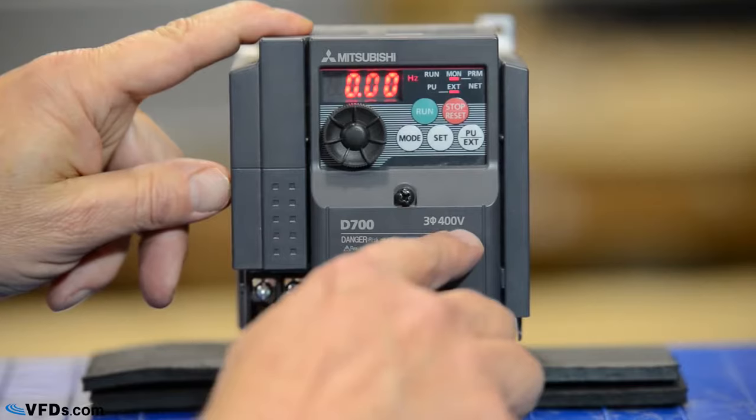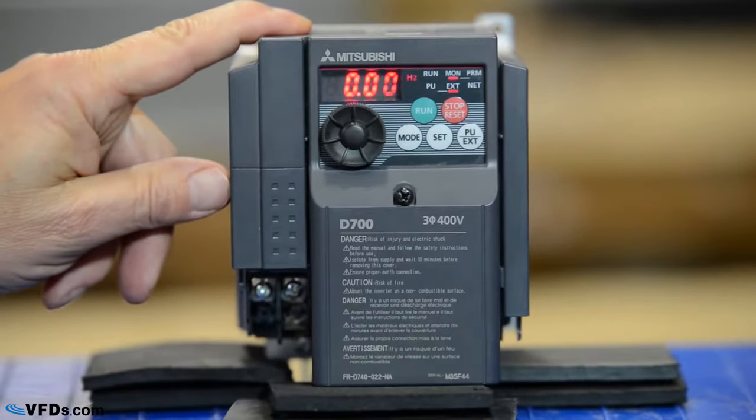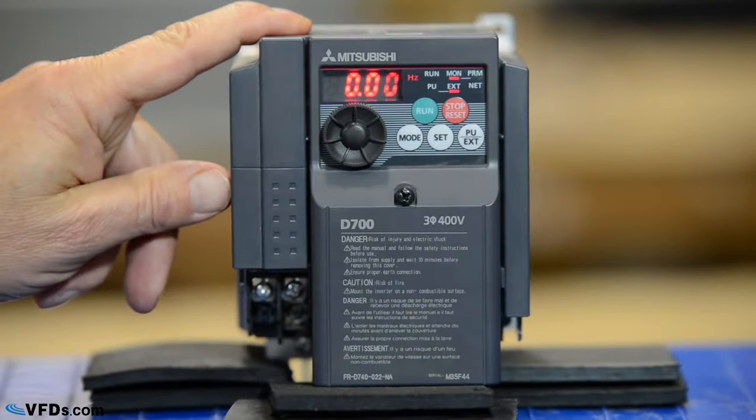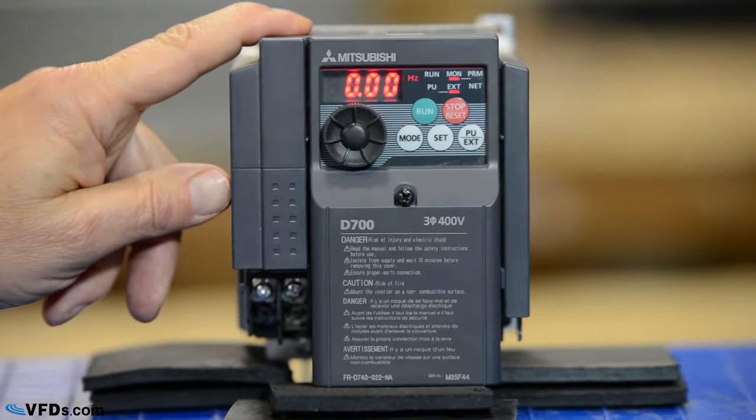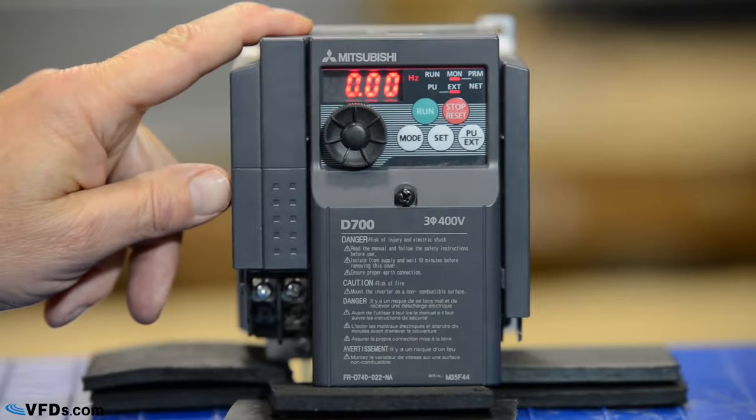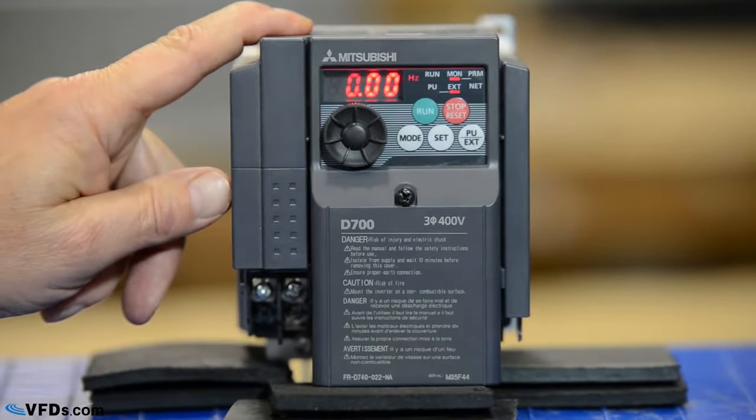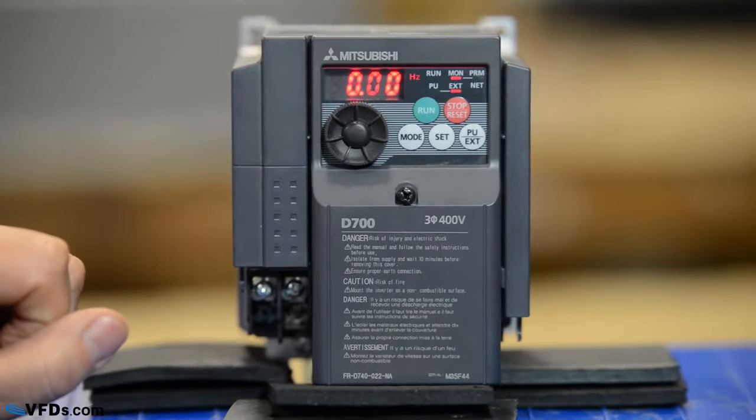This is a 400 volt drive, so we're powering it right now with 480 volts three-phase. It's a 2.2 amp drive, suitable for a one or one and a half horsepower 480 volt motor. We're going to be using the standard programmer that comes with the drive today.